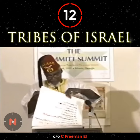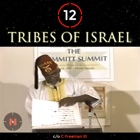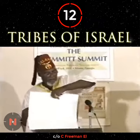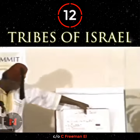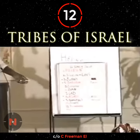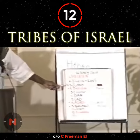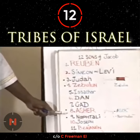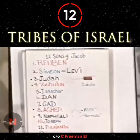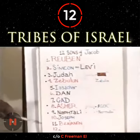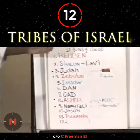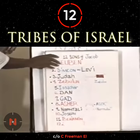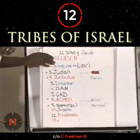I want you to take a look at something interesting here. These are the twelve sons of Jacob: Simon, Judah, Zebulon, Issachar, Dan, Gad, Asher, Naphtali, Joseph, Benjamin. And that was my little trick for the class — I put both, because these are twins.